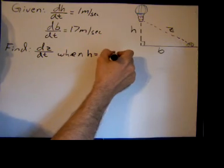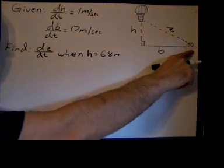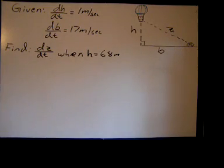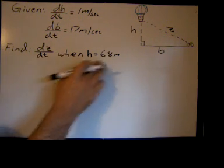And three seconds later, it's going to be 68 meters. Because it's rising at a rate of one meter per second. And that actually cures a problem we might have later. We want to find dZ/dt when H equals 68 meters.